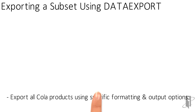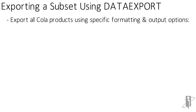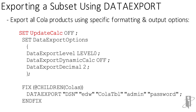For something really big, we want to take all of the COLA products in our whole database. We're going to set update calc off so it operates on every block, not just the dirty blocks. We'll set the data export options: export all level-zero data, only stored members (not dynamic calcs), and truncate extra decimals to export only two decimal places. Then we do a fix on children of COLAs — every product underneath COLAs — and export it to the same EDW data source but a different table, creatively called COLA_TBL, with username admin and password password.